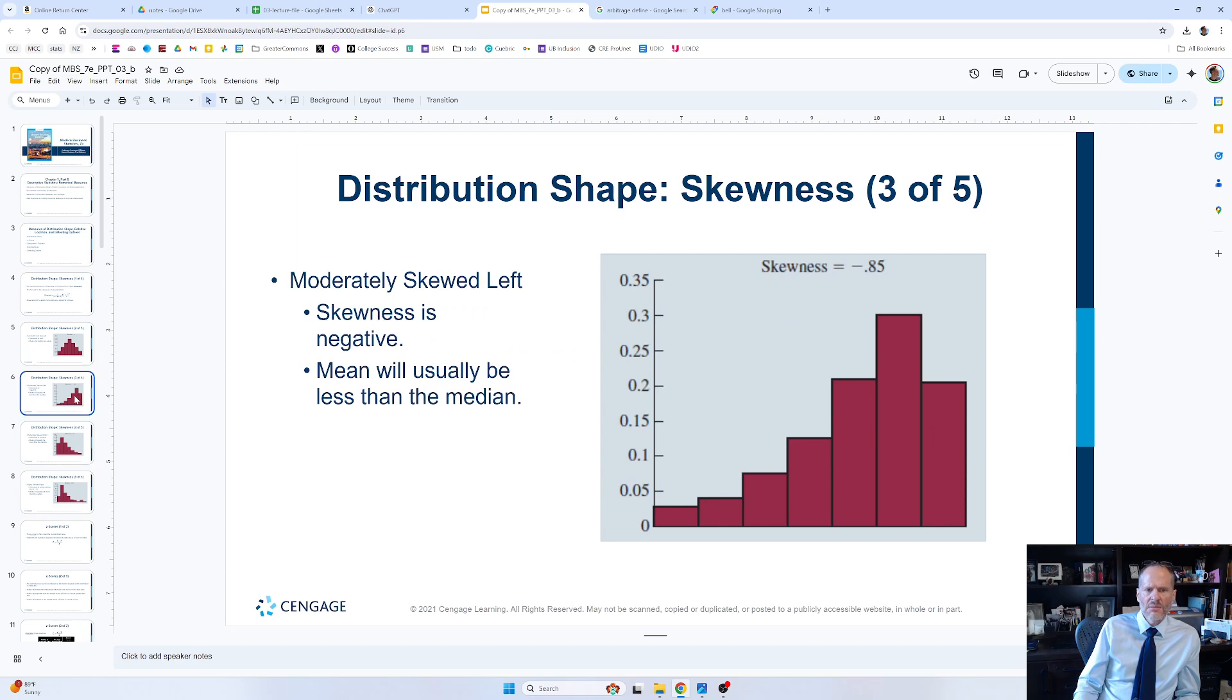Here is a moderately skewed left. And in this case, the mean will usually be less than the median. So the middle of the data will be over here and the mean will be over here. So the mean is less. And this is called skewness is negative, negative 0.85.